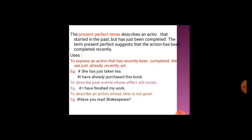Present perfect tense is also used to describe past events whose effect still exists. For example: I have finished my work. It is also used to describe an action whose time is not given, like: Have you read Shakespeare? Here the action is done but we don't know when it was done, and we still use present perfect tense with the past participle form of the verb.